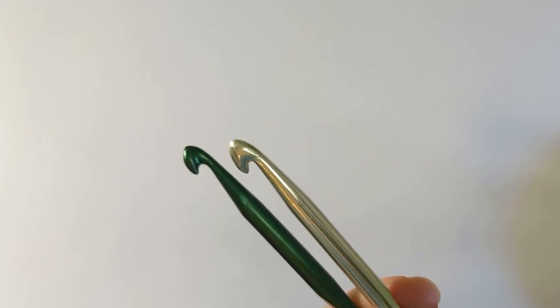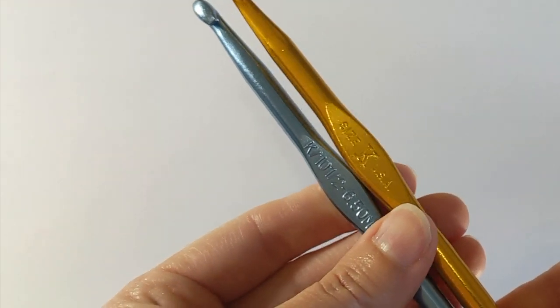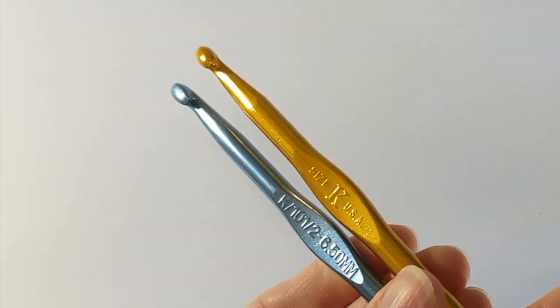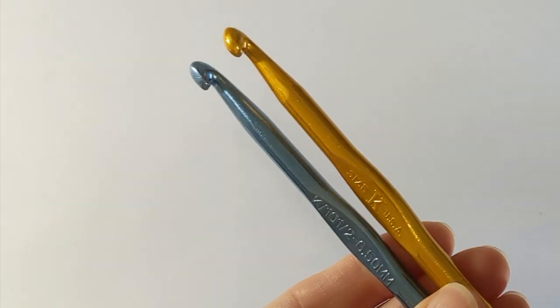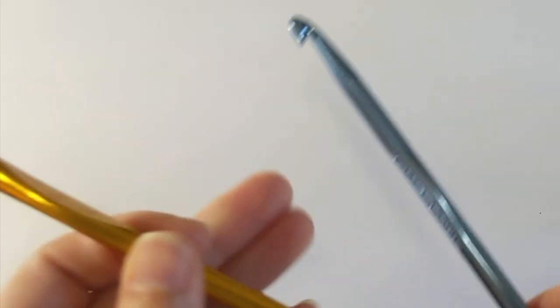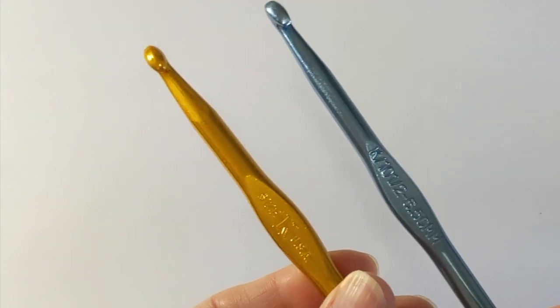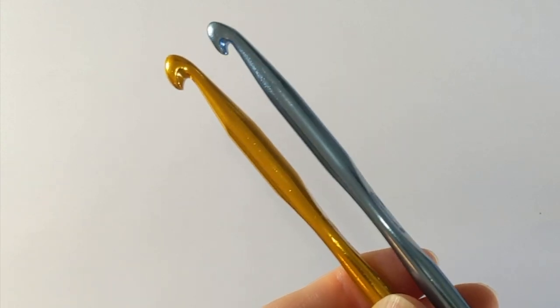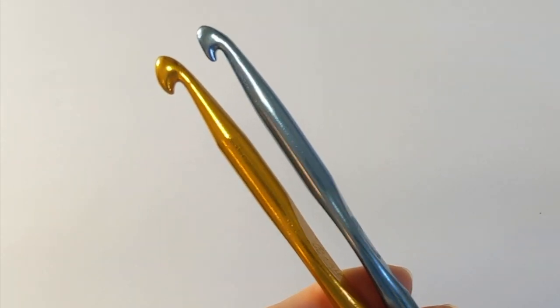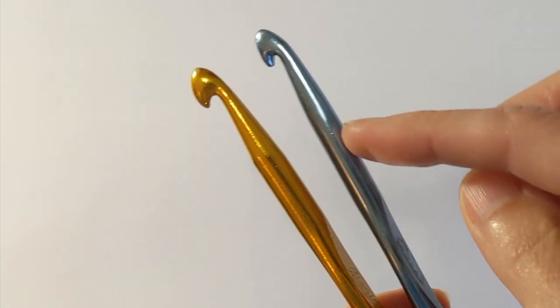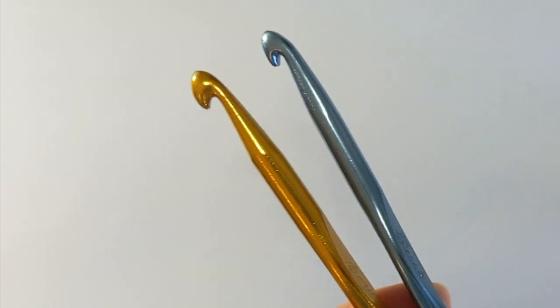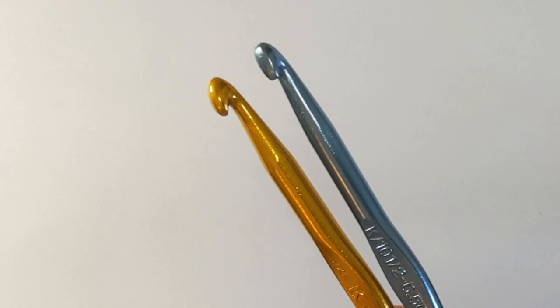Let's look at these vintage versus modern size K hooks. These are 6.5 millimeter hooks. I have the blue modern and the vintage yellow. And let's look to see, do you see how the angles are slightly different on the heads as they come up off the back and around?